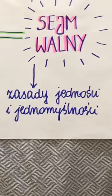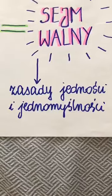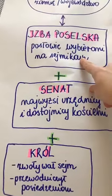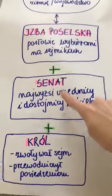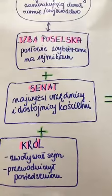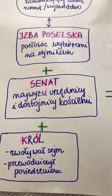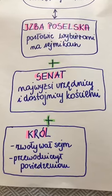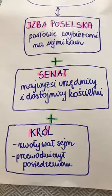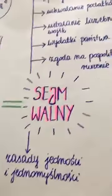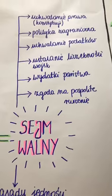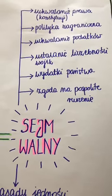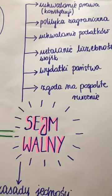Sejm walny miał podejmować decyzje jednomyślnie. Jednogłośnie – czyli te trzy stany, jeżeli chciały na przykład wypowiedzieć komuś wojnę, siedzą dotąd, aż wszyscy będą razem zgodni. Sejm walny miał uprawnienia: przede wszystkim uchwalał nowe prawa – każde prawo wydawane przez Sejm nazywało się konstytucją. Żebyście wiedzieli: w Rzeczypospolitej Obojga Narodów każda uchwała wydawana przez Sejm nazywała się konstytucją – nie tylko ta z 3 maja.